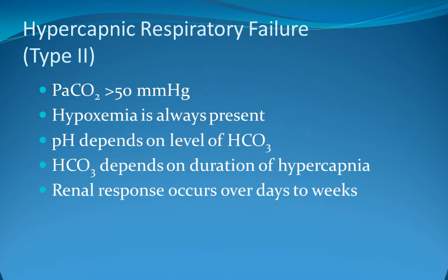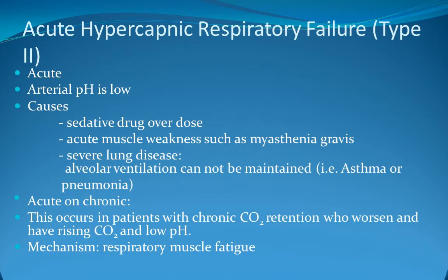Type 2 respiratory failure is characterized by CO2 retention with PO2 always low. PCO2 can be more than 6 kPa and is caused by alveolar hypoventilation with or without VQ mismatch. Hypoxia is always present; pH depends on bicarbonate levels, which depend on the duration of hypercapnia, with renal response occurring over days to weeks. In acute type 2 failure, arterial pH is low and causes include pulmonary disease, impaired respiratory drive, neuromuscular disease, and thoracic wall disease.